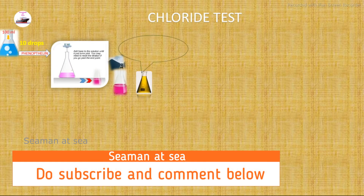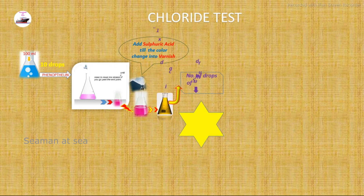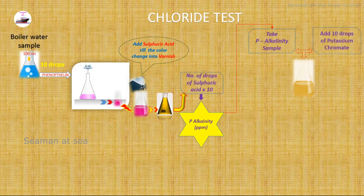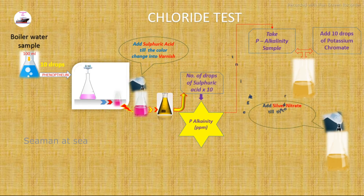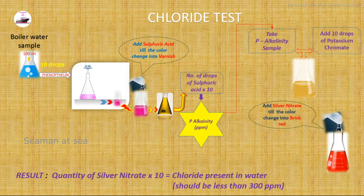Now we will see the chloride test. We use the phenolphthalein alkalinity sample already prepared. We add 10 drops of potassium chromate — the color changes to yellow. Then we add silver nitrate (AgNO₃); the color starts changing to brick red. Once the color changes to brick red, we stop adding silver nitrate. The quantity of silver nitrate multiplied by 10 gives the chloride level, which should be less than 300 ppm.